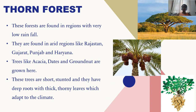Now let's know about thorn forests. These forests are found in regions with very low rainfall, in places like Rajasthan, Gujarat, Punjab, and Haryana. Trees like acacia are found here — many of you seeing this tree might remember the trees of Africa. Date trees are also grown here — these are the dates which we eat. Groundnut also grows here, though it's actually a small plant rather than a tree.